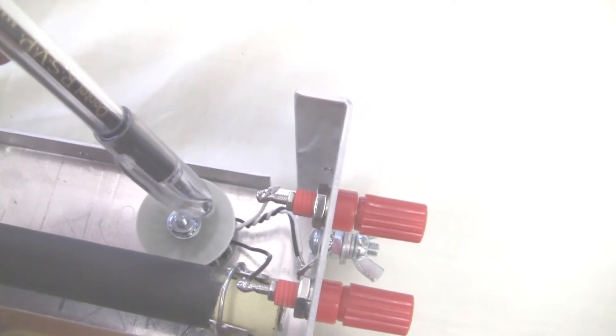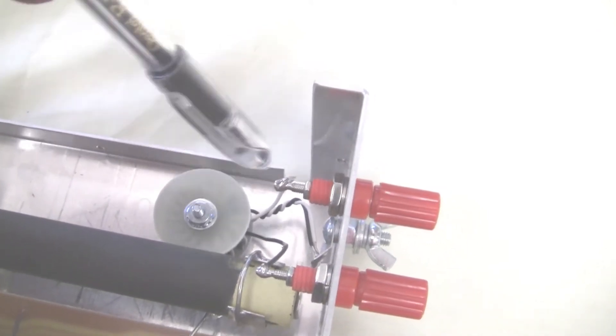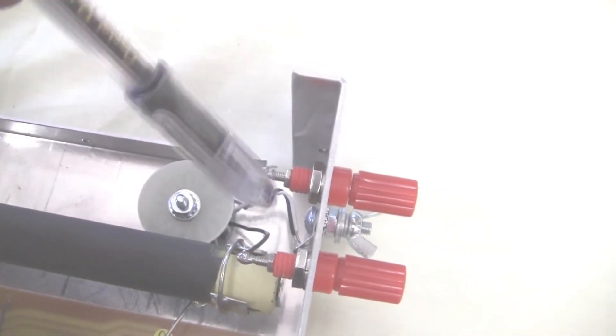And over here is the balun. If you're going to feed a twin lead type circuitry, your type of lead, 450 ohm, 300 ohm, this is a balun for that.